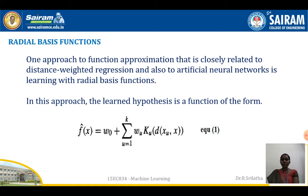In this approach, the learning hypothesis is the function of the form: f(x) is nothing but an initial weight w₀ plus a summation for mu equal to 1 to k of w_u times the kernel function k_u into the distance between instance x_u and x. This is equation number 1.